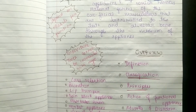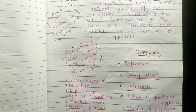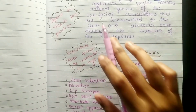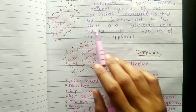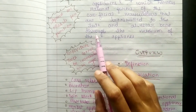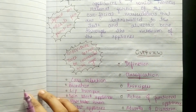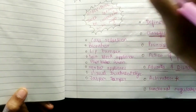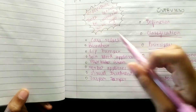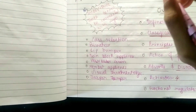The forces from the muscles are transmitted to the teeth and the alveolar bone through the medium of the appliance. It is very important to understand that myofunctional appliances depend on muscles for their function.